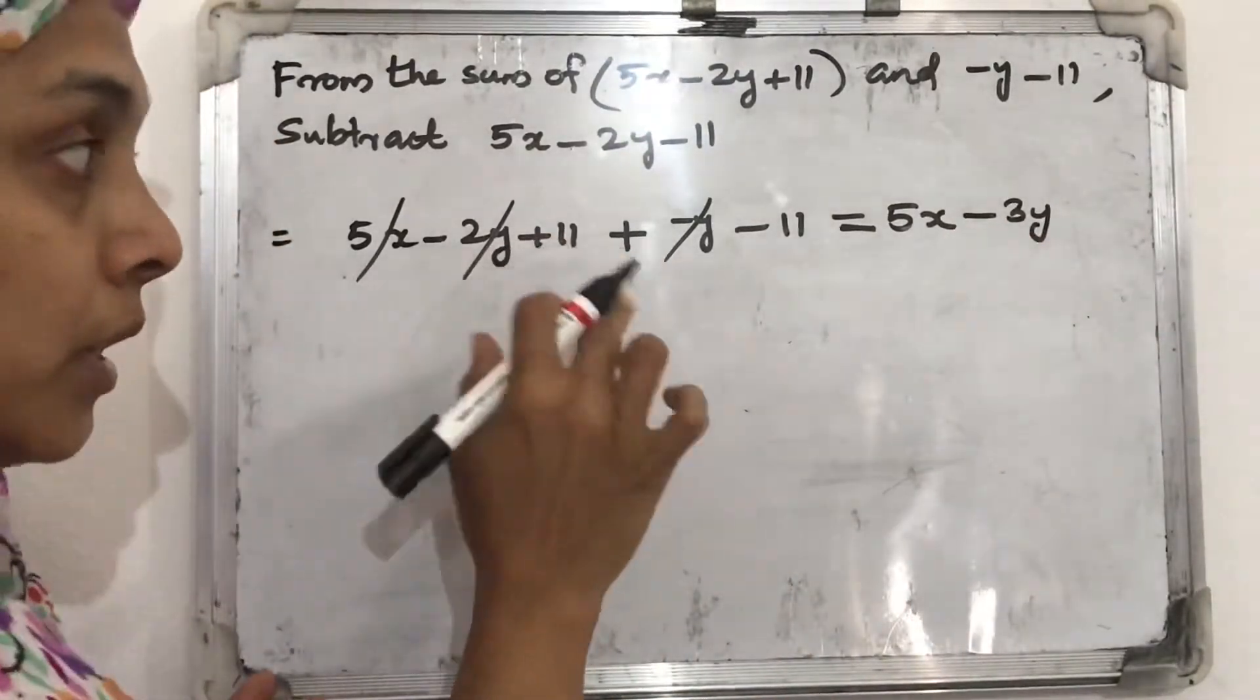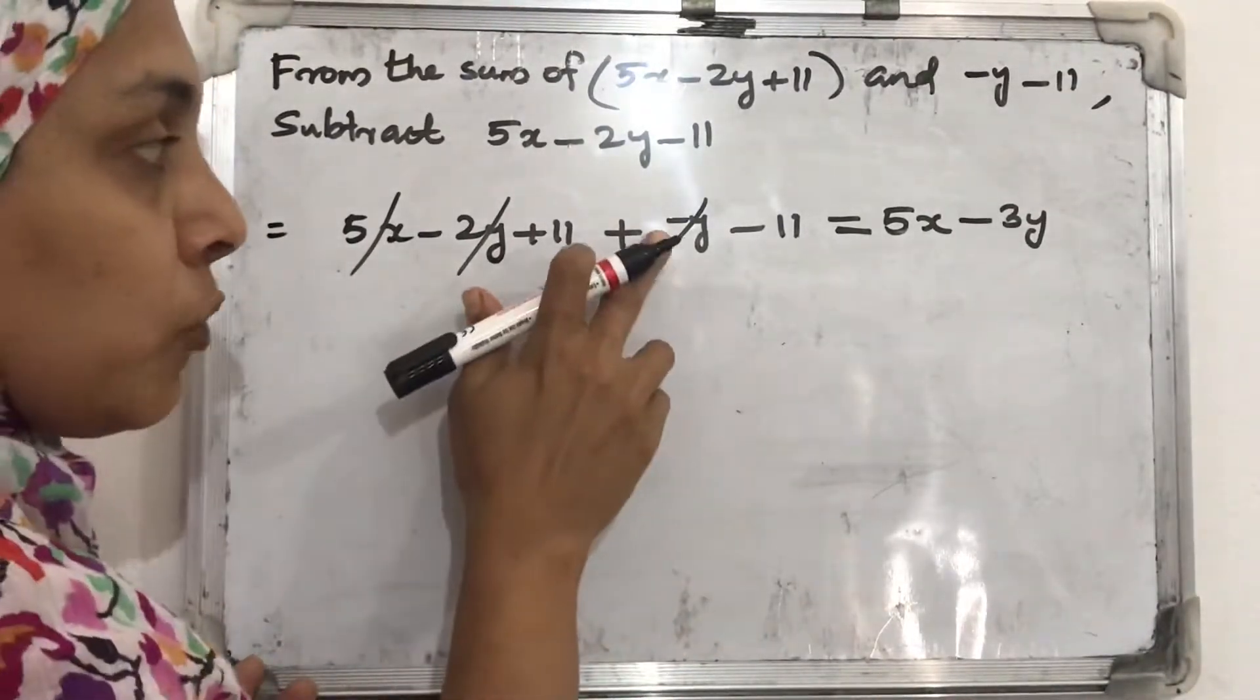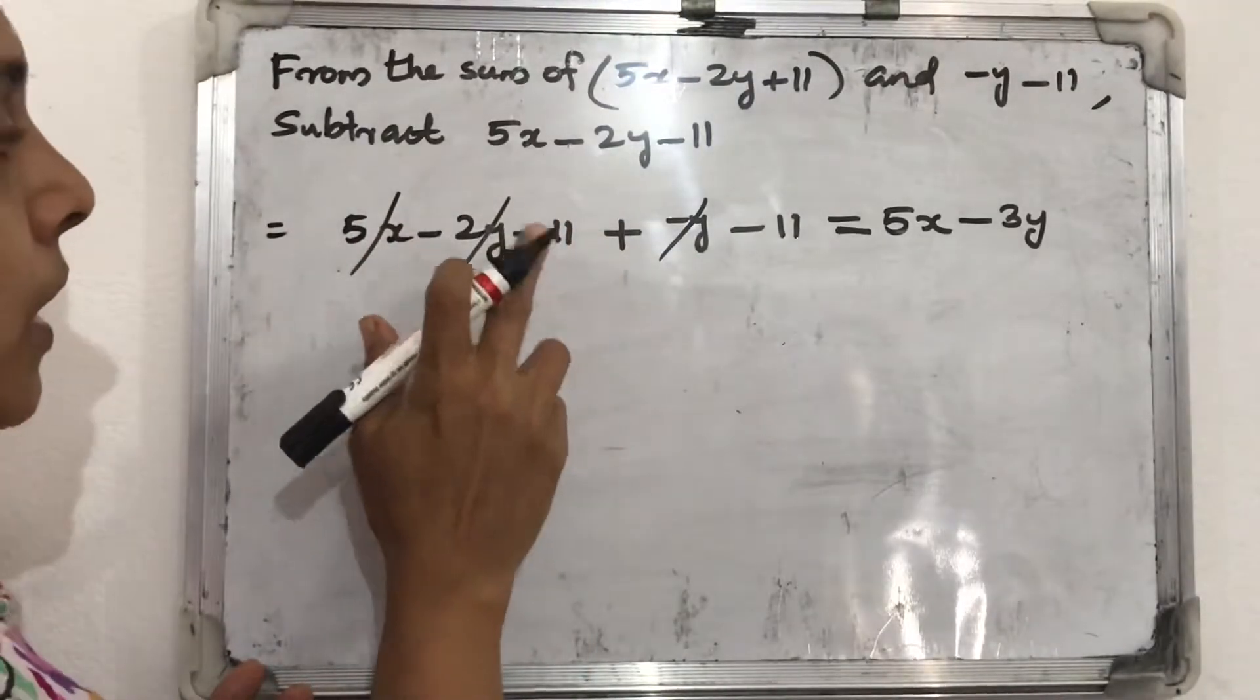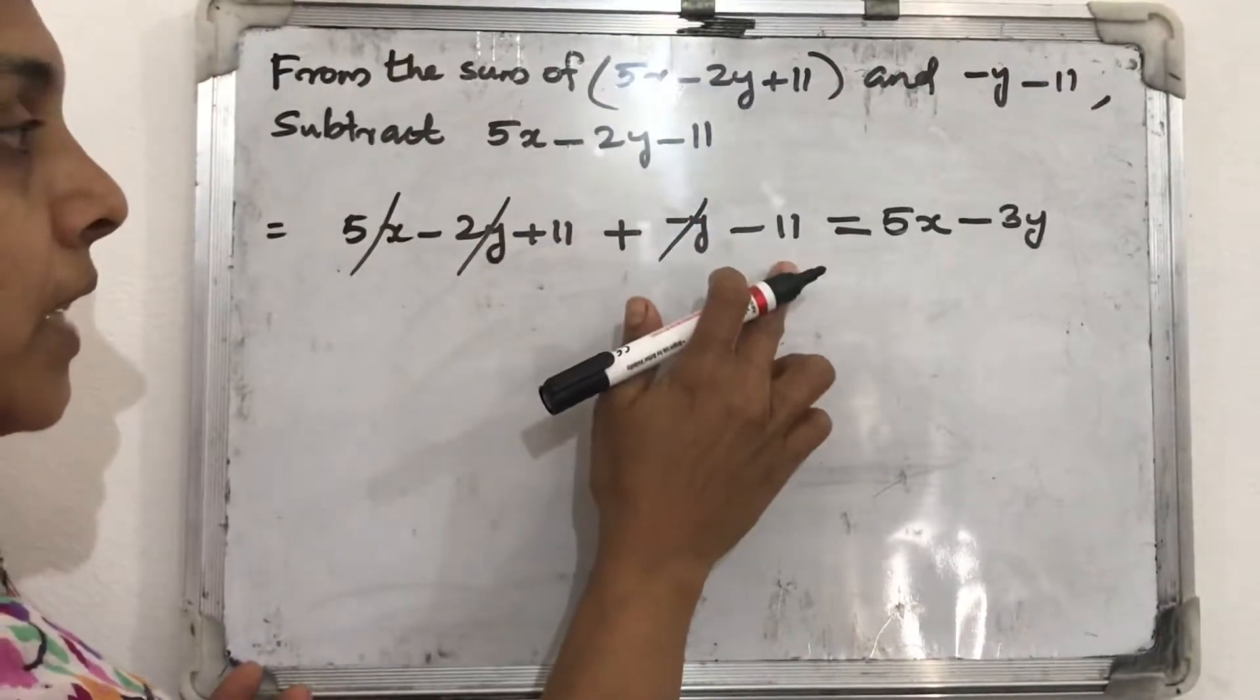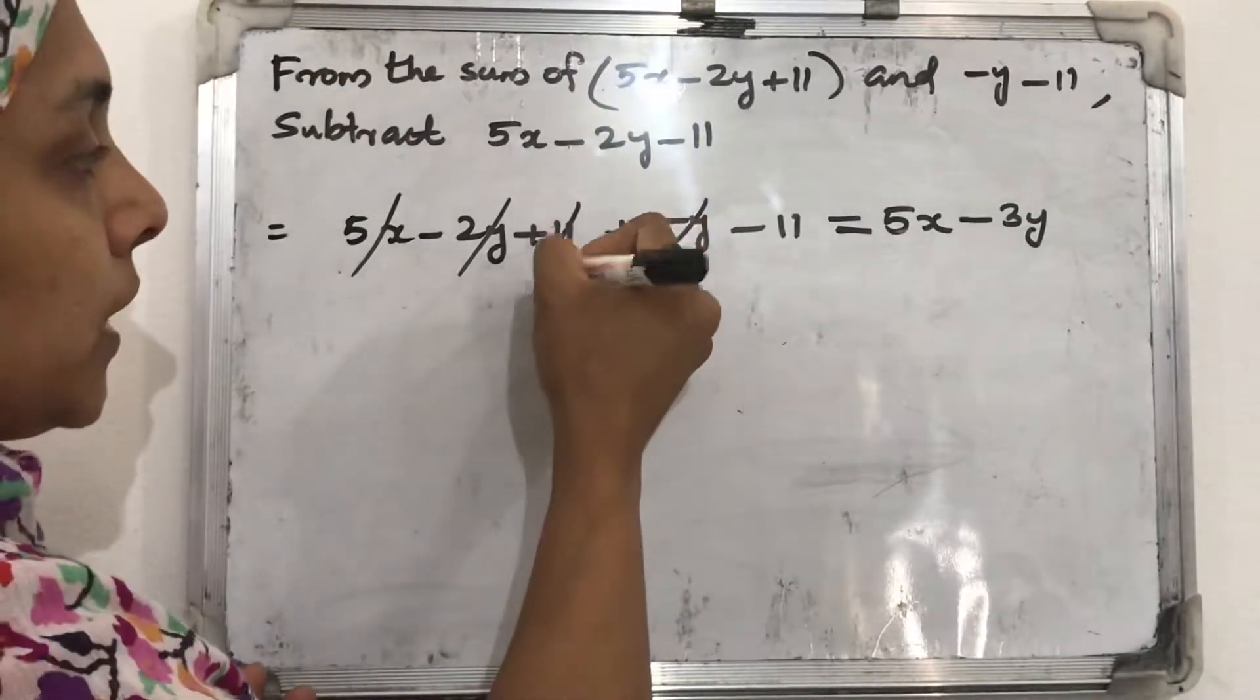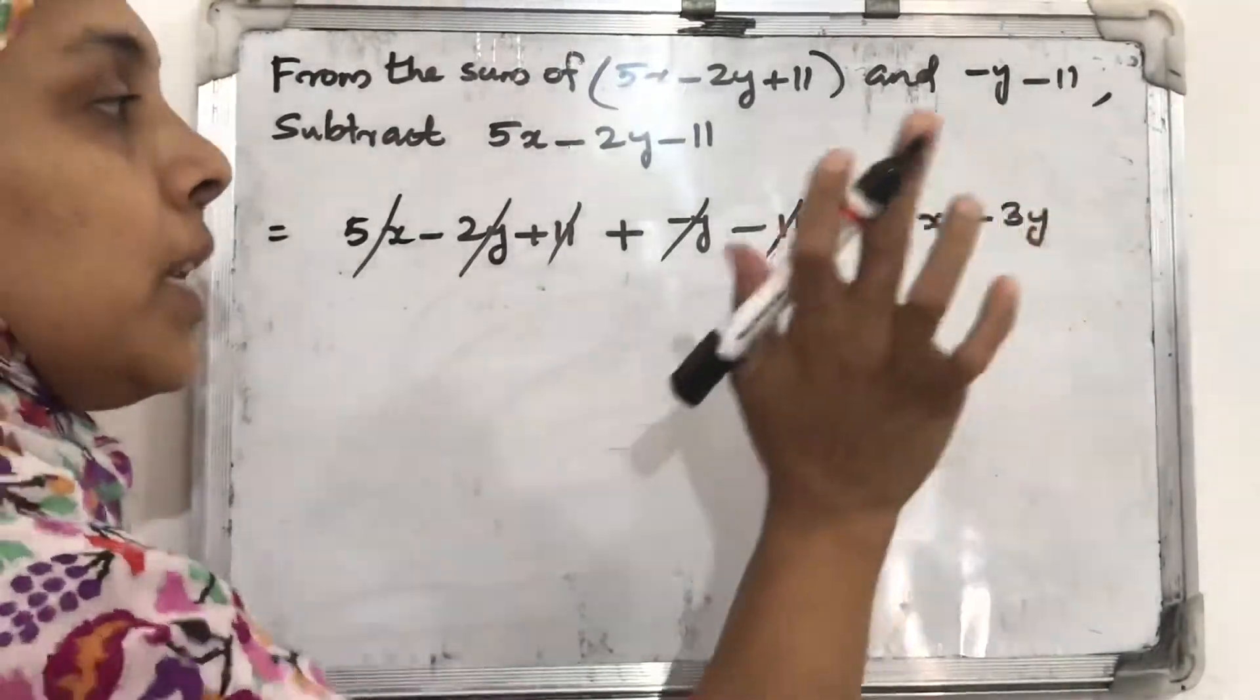We want to be careful if there is no coefficient. The coefficient we want to take it as 1. If it is minus here, the coefficient will be minus 1. And what is remaining? Plus 11 and minus 11. What is its answer? That also becomes 0. With the same number with different signs, that also will be 0. So 5x minus 3y.